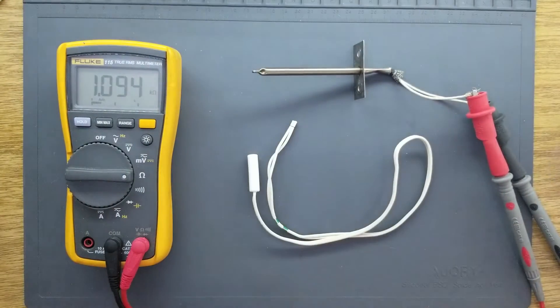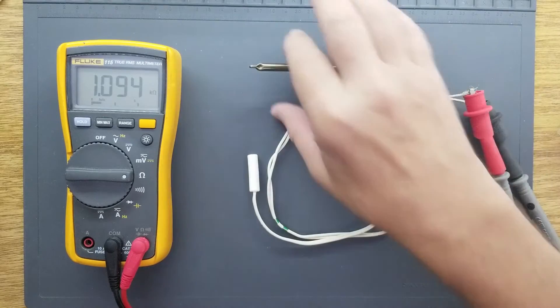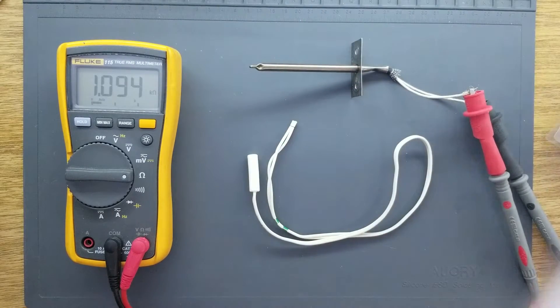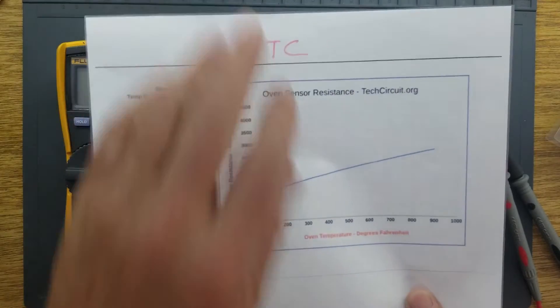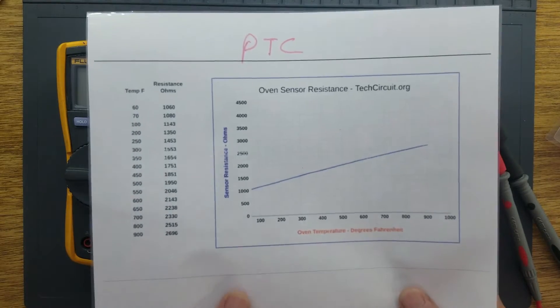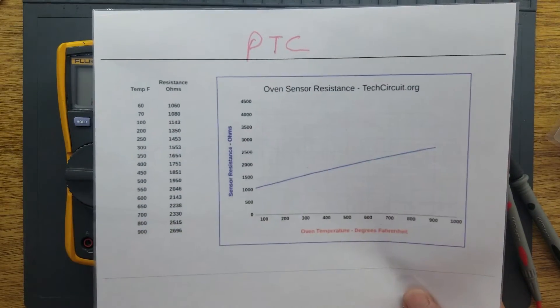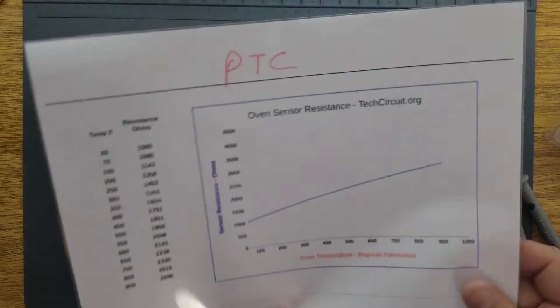This is an oven sensor, and this is known as a PTC thermistor. PTC means positive temperature coefficient, and that means that as the temperature increases, its resistance increases.